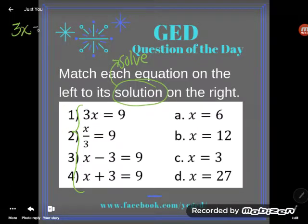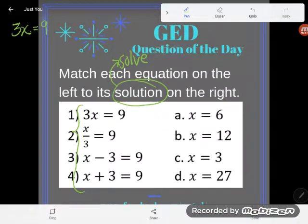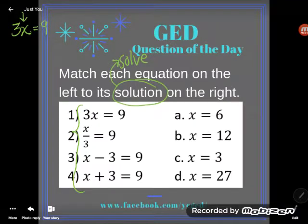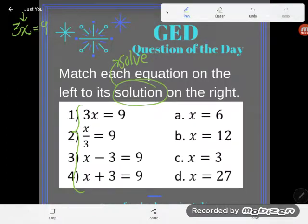Number one says 3x equals 9. What does it mean to solve an equation? It means to get the letter alone on its side of the equal sign. So I'm trying to get this x to be isolated, to be alone. In order to do that, I need to get rid of the three. Right now the x is not alone because of that three.